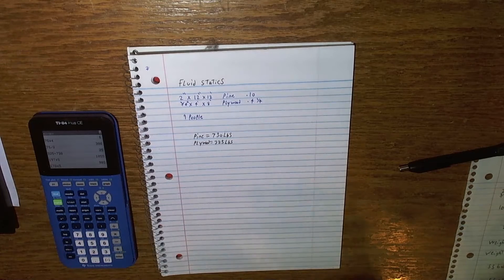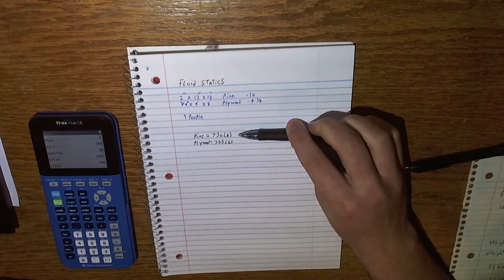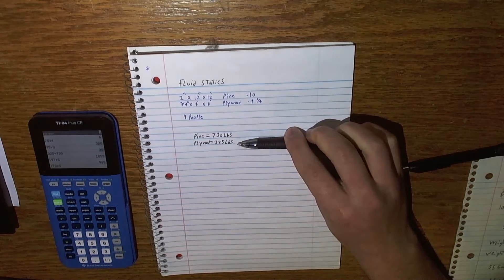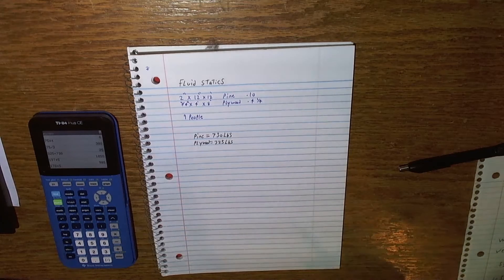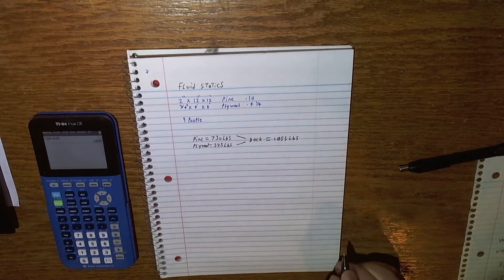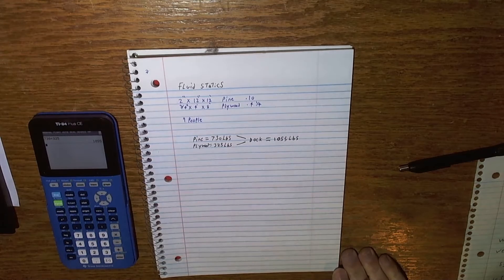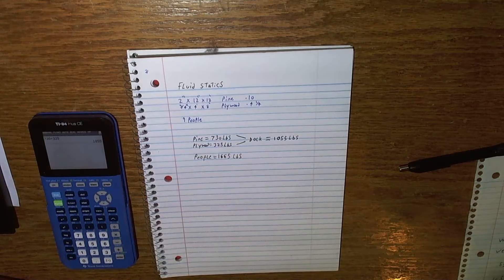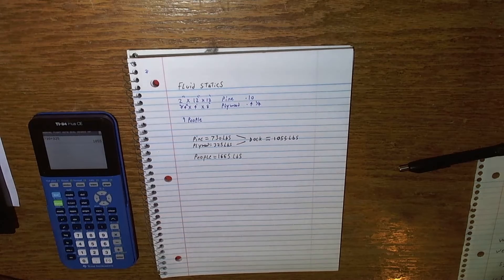So the weight of the pine is 730 pounds. The weight of the plywood is 325 pounds. The weight of the whole dock, 1055 pounds. The weight of the people, 1665 pounds.